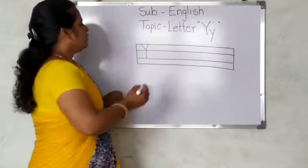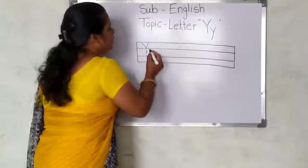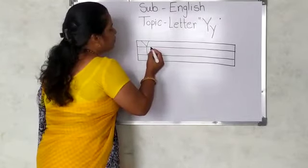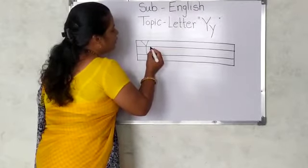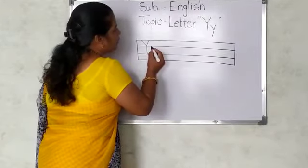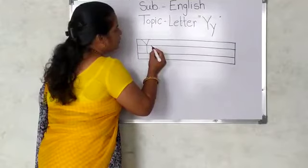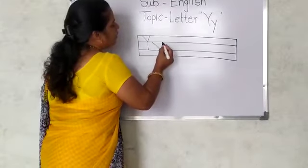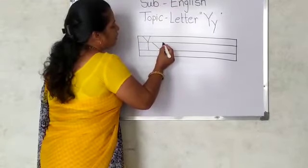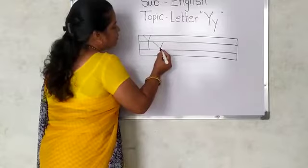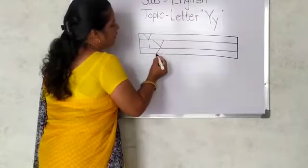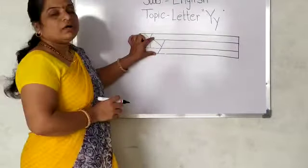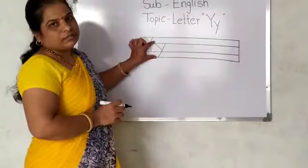Small y is a tail letter, so start from the first blue line. Make a slanting line down, and make another slanting line down. It is in the down three lines.